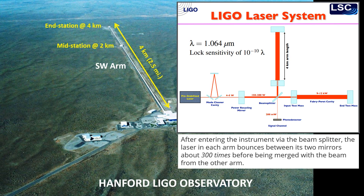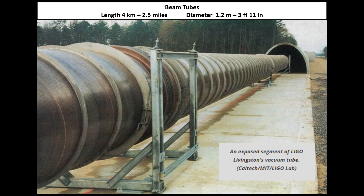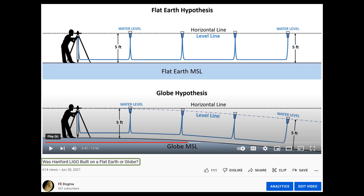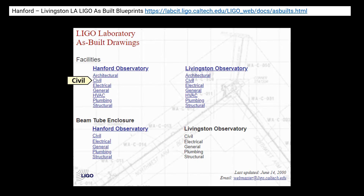Now I think most everybody knows that Hanford LIGO is an interferometer with two perpendicular arms that are almost 2.5 miles in length. Since the laser beam is bounced off mirrors at each end of this beam tube, that beam tube needs to be straight, and that means the concrete slab it sits on also needs to be straight. I was able to get LIGO blueprints that included elevations for that slab, and I provided a link to those blueprints so people could check the data I used — and I'll do this again; it will be in the description.